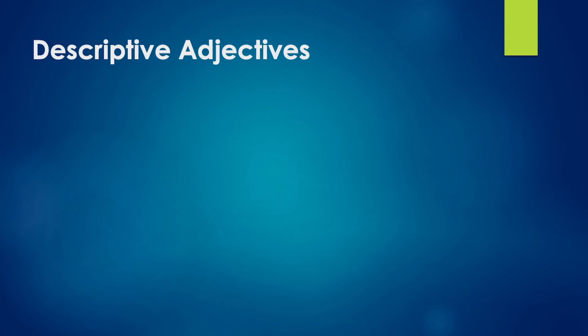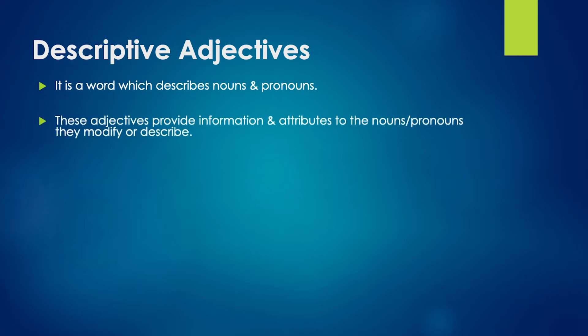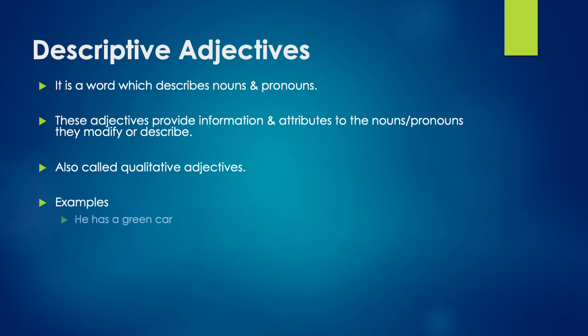Let us begin with descriptive adjectives. A descriptive adjective is a word which describes a noun or pronoun. Most adjectives belong to this type. These adjectives provide information and attributes to nouns and pronouns — they modify or describe. Descriptive adjectives are also called qualitative adjectives. For example, he has a green car. The word green is describing an attribute of the car, hence green is a descriptive adjective. I am hungry — here the word hungry is providing information about the subject, so hungry is a descriptive adjective.